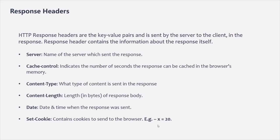Apart from these, there is also another response header called Location. The Location header contains the URL to redirect to — it can be used for redirection from one URL to another. We will practically use this Location response header when redirecting from one action method to another when working with MVC architecture.